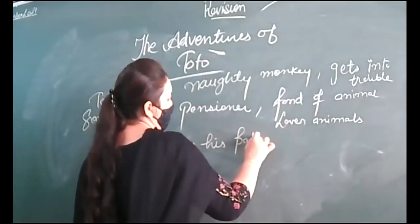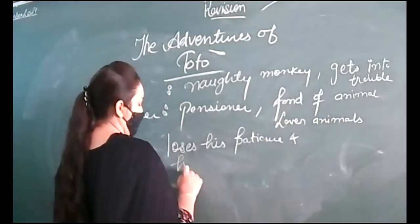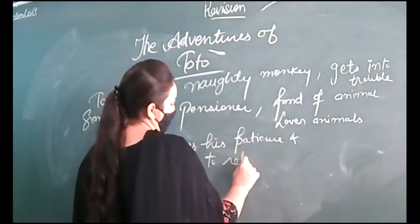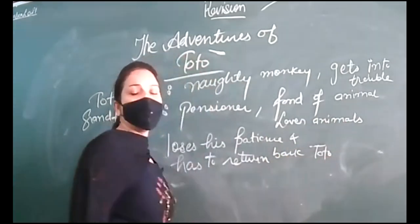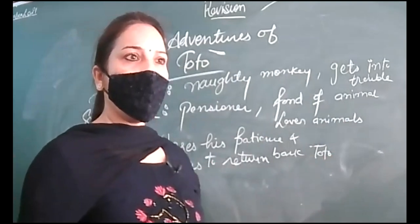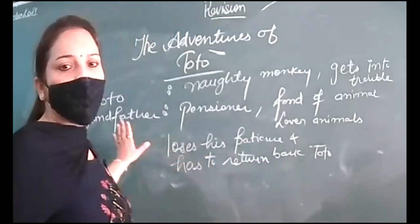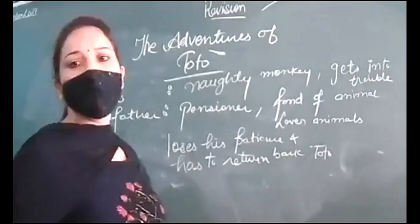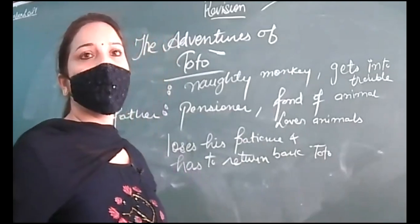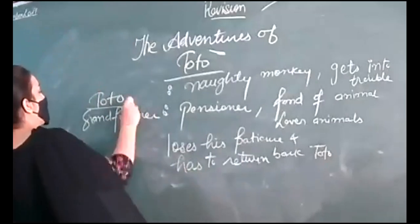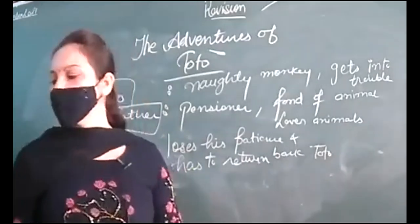He loses his patience and he has to return Toto back. Earlier he was very fond of Toto and brought him home, but Toto was so mischievous he was not able to be controlled. At last, grandfather — who really loved animals — lost his patience and had to return Toto. So the two main characters are Toto and Grandfather.